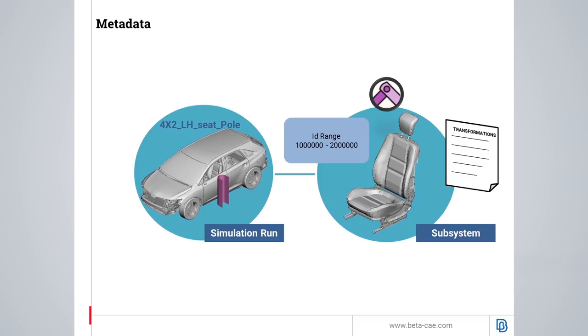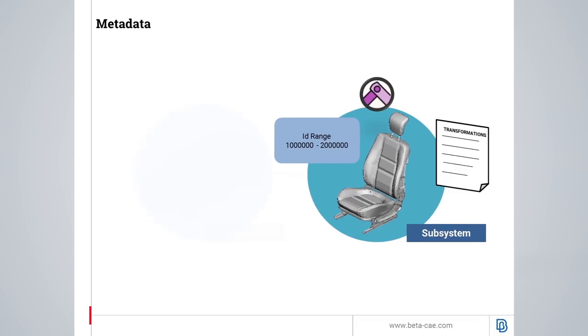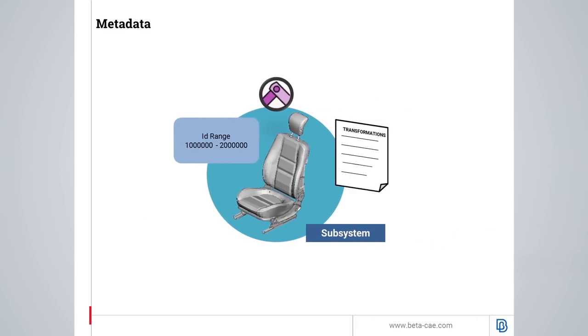For instance, the position of the seat in the vehicle, information of how the seat is connected to the vehicle, as well as the range of IDs that are occupied in the simulation run. ANZA identifies that information and saves it as metadata.